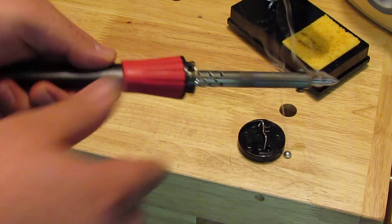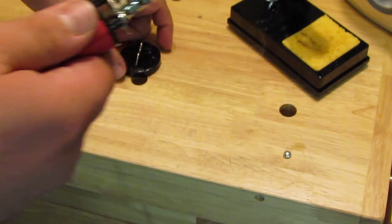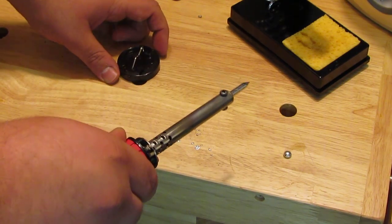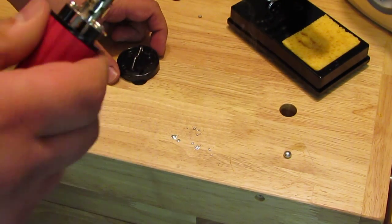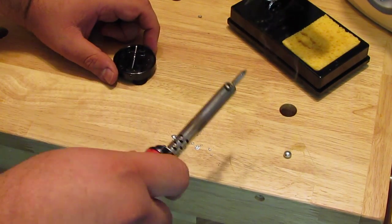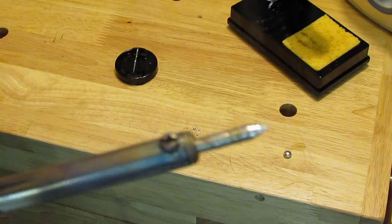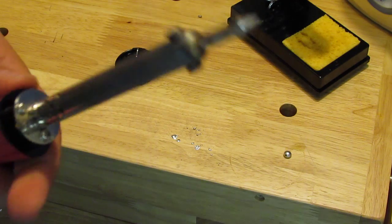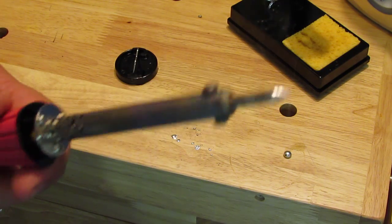There we go, my soldering iron is fully tinned just like that. There's some excess that you can just flick off, and then you have a fully tinned soldering iron. Perfect. There you go.